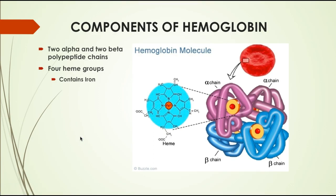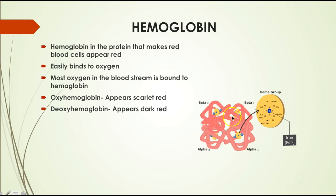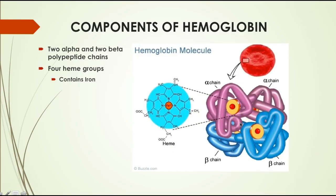The hemoglobin molecule fills the red blood cells and has two alpha chains and two beta chains — polypeptide chains made of amino acids. There are four heme groups on each hemoglobin molecule, meaning each hemoglobin molecule can combine with four oxygen molecules. The heme group contains iron at its center, and this iron is important for binding to oxygen.